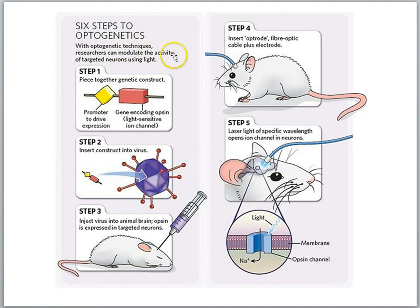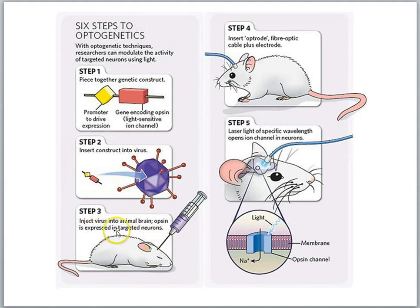With optogenetic techniques, researchers modulate the activity of targeted neurons using light. Step one: assemble a genetic construct with a promoter to drive gene expression and a gene encoding an opsin — a light-sensitive ion channel protein. Insert the construct into a virus, then inject the virus into a specific brain region so the opsin is expressed in targeted neurons. Then insert an optrode — a fiber optic cable with a small electrode — to shine light on the brain cells.